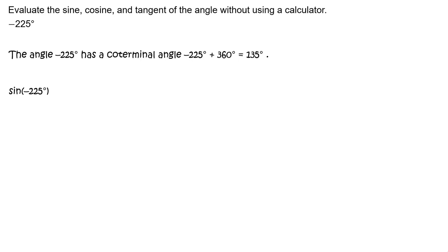Sine of negative 225 degrees equals sine of 135 degrees, which equals the square root of 2 divided by 2.